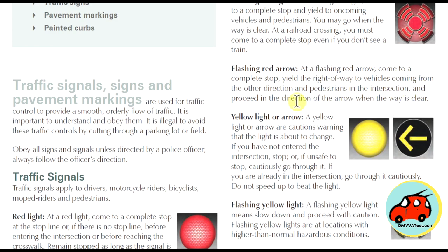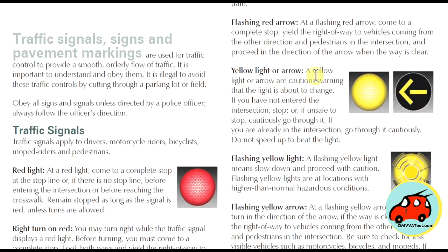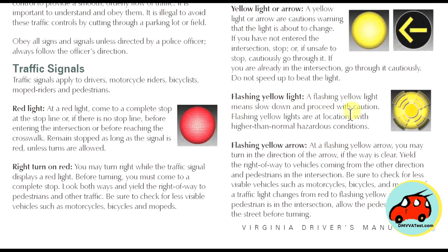A yellow light or arrow is a caution and a warning that the light is about to change. If you have not entered the intersection, stop; or if it's unsafe to stop, cautiously go through it. If you are already in the intersection, go through it cautiously — do not speed up to beat the light. A flashing yellow light means you need to slow down and proceed with caution, and is used at locations with higher-than-normal hazardous conditions.